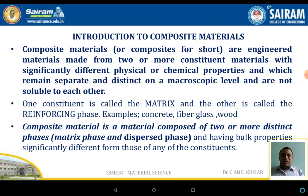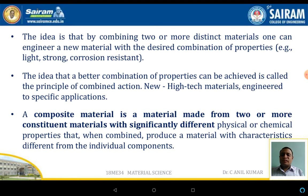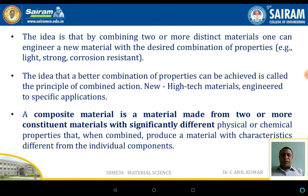The composite has two bulk properties significantly different from those of any constituents. The idea is that by combining two or more distinct materials, one can design a new engineering material by which the desired constituent properties can be achieved very easily. A better combination of properties can be achieved, which is called the principle of combined action. High-tech or high-strength engineered materials can be achieved very easily in the case of composite materials.